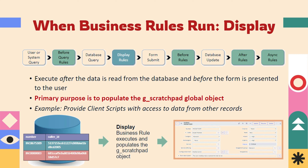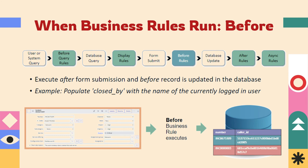When form submission happens, we have before rules. The before business rule executes after form submission and before the record is updated in the database. For example, suppose we have to populate 'closed by' with the name of the currently logged-in user whenever we are closing a ticket or incident. We can populate this 'closed by' field with the user's name using a before business rule.